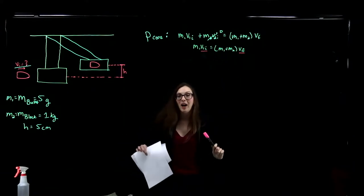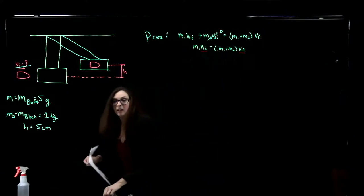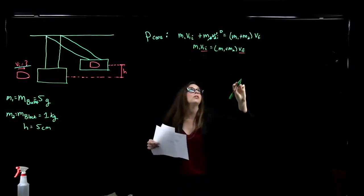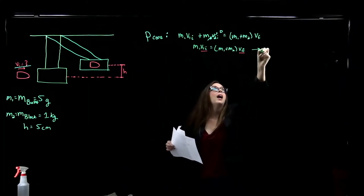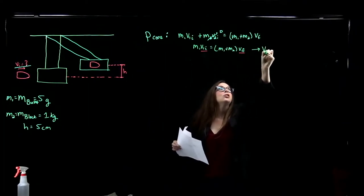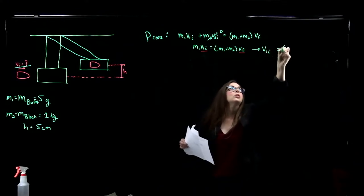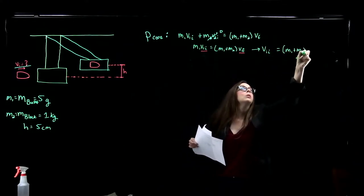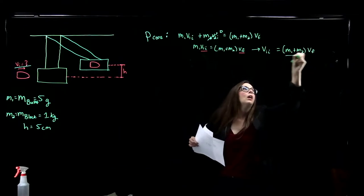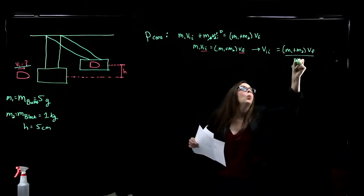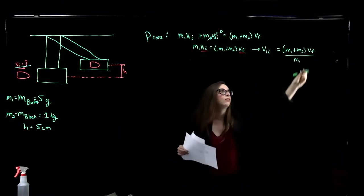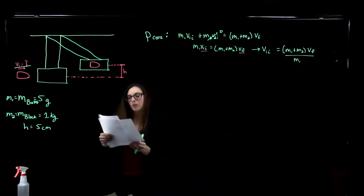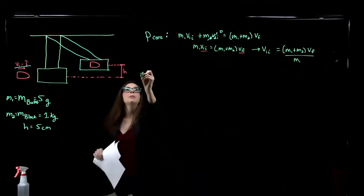Then we can find our initial velocity. Let's go ahead and solve this equation for our initial velocity. The initial velocity of our bullet is equal to M1 plus M2 times V_final, all over M1. So we have to get this V_final, and we'll do that through conservation of energy.